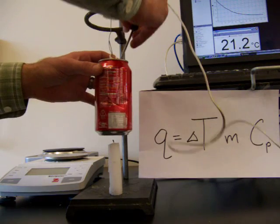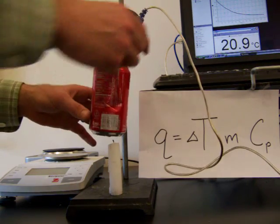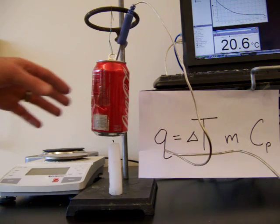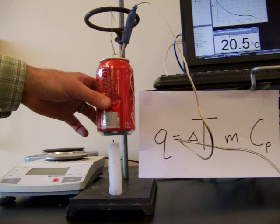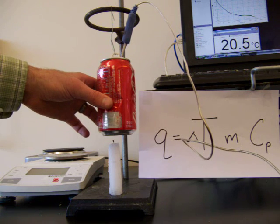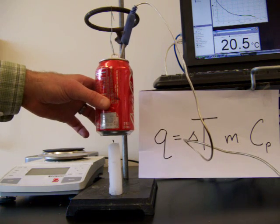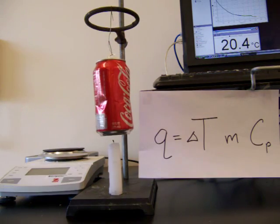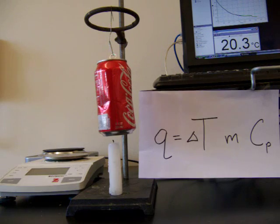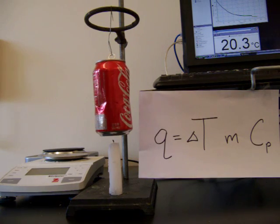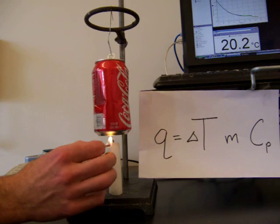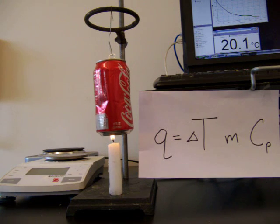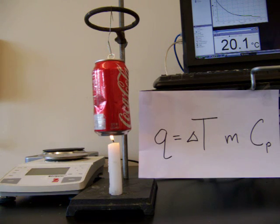Let's find the initial temperature of the water. So the initial temperature of the water in the soda can, it looks like 20.5 degrees Celsius is the initial temperature of the water in the soda can. So now let's light our candle. We'll light the candle, and we'll let it burn for about five minutes, and then we'll find the final temperature of the water.